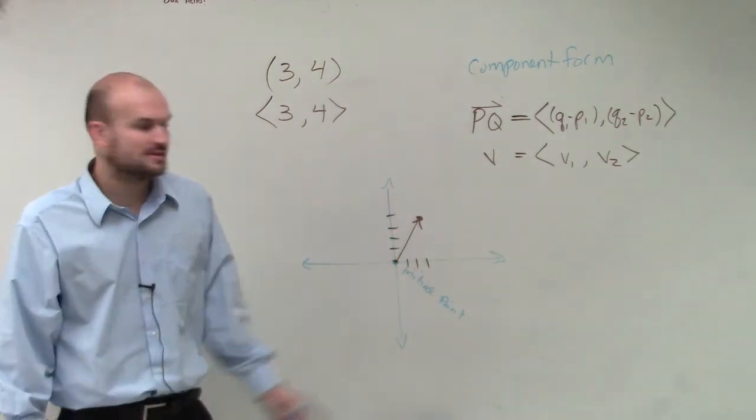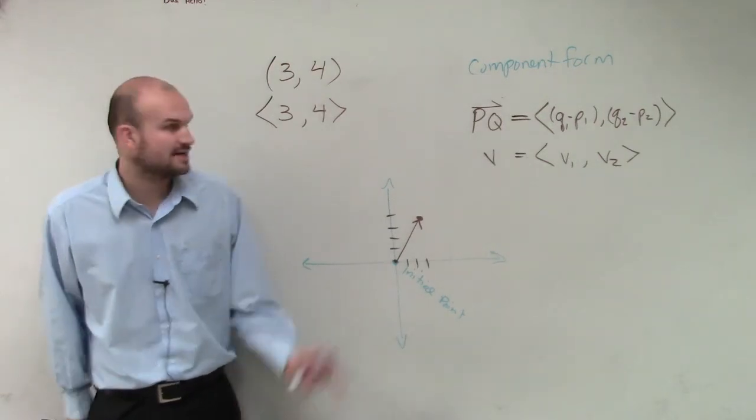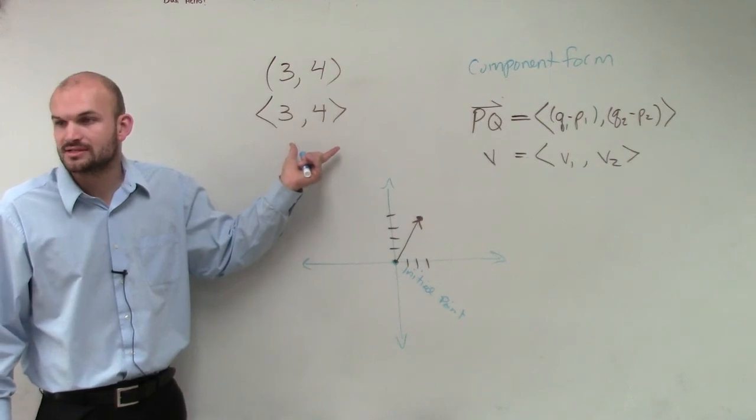And it's going to be directed. It's still going to end at 3, 4, but it's going to be directed there. All right? So you guys kind of know the difference of why we're going to be using these kind of pointed parentheses?